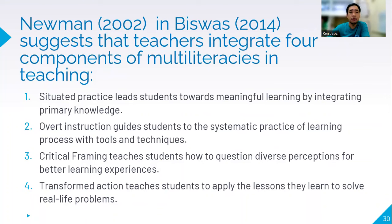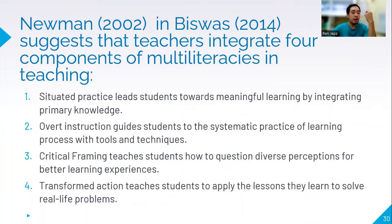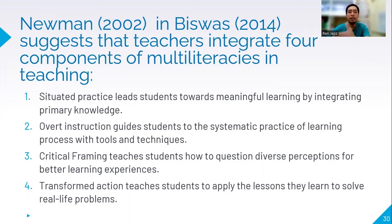The four components of multiliteracies for future teachers to integrate in the classroom are: number one, situated practice — leads students toward meaningful learning by integrating primary knowledge, making always a situational scenario to help students develop critical thinking, analytical skills, and higher-order thinking skills. Number two, overt instruction — guides students in the systematic practice of learning processes with tools and techniques. Number three, critical framing — teaches students how to question diverse perceptions for better learning experience. Number four, transform action — teaches students to apply lessons learned to solve real-life problems.